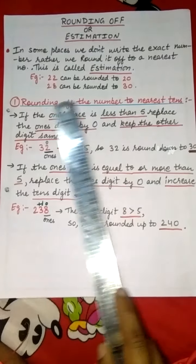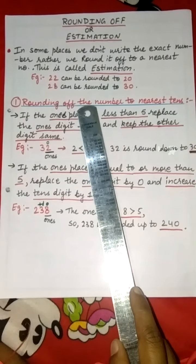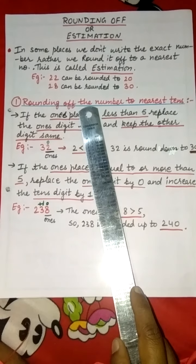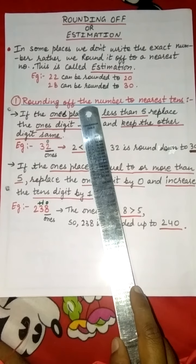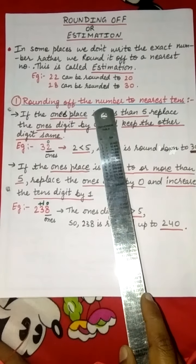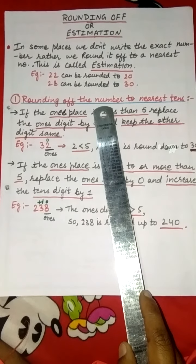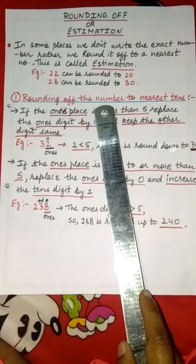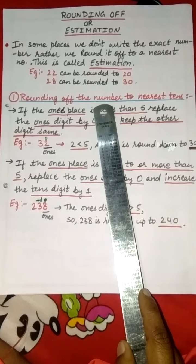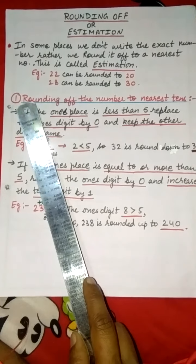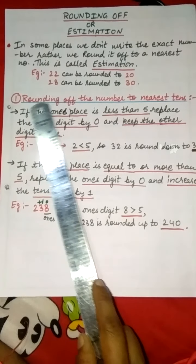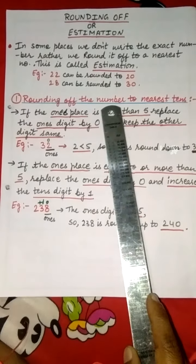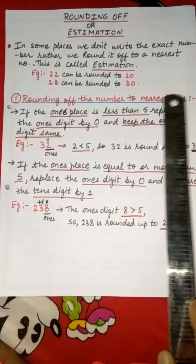We will study rounding off numbers one by one: to the nearest tens, to the nearest hundreds, and to the nearest thousands. First, we will discuss rounding off numbers to the nearest tens.